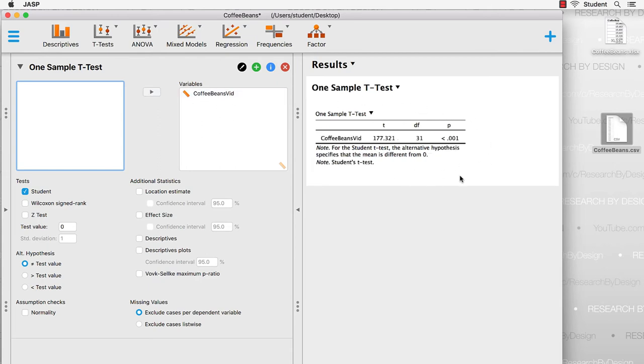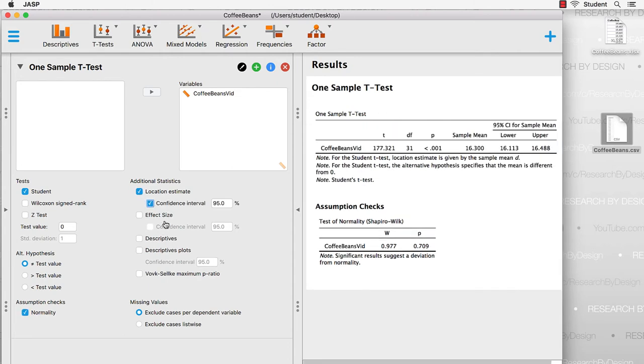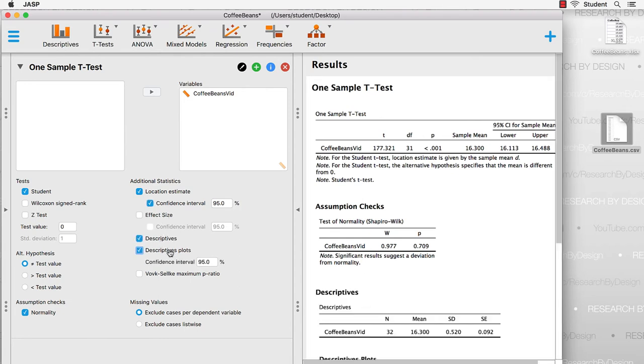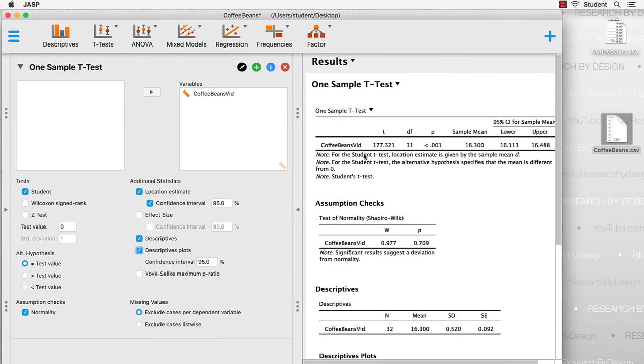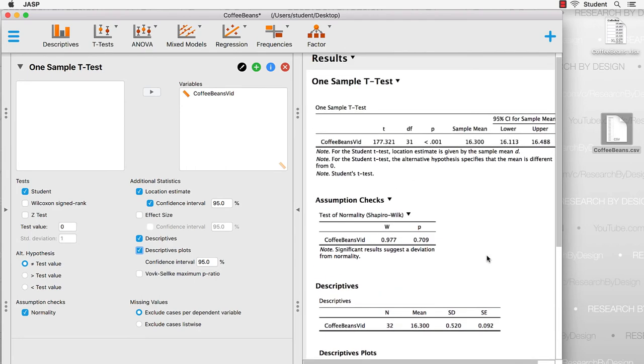Now already, I'm getting some output, but there's something wrong with this output. I'll explain it in just a moment. Let me get the other settings. I do want to check for normality. Make sure my data passed the assumption of normality. I'll get a location estimate with a 95% confidence interval. I will skip the effect size because of the bug, but I will get descriptive statistics and a descriptive plot. You'll notice that my t-value is 177, and that's just outrageous because I have not done one very important thing.